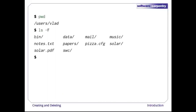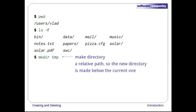Let's go back to Vlad's home directory, /users/vlad. As in the previous episode, ls -F shows us the files and directories it contains. Let's create a new directory called temp with the command 'mkdir temp'. As you might guess from its name, mkdir means make directory. Since temp is a relative path without a leading slash, the new directory is made below the current one.